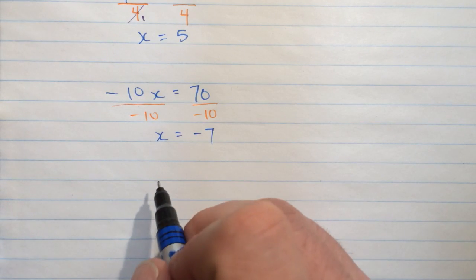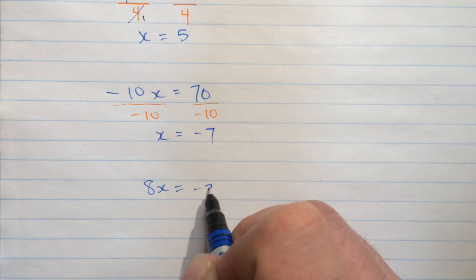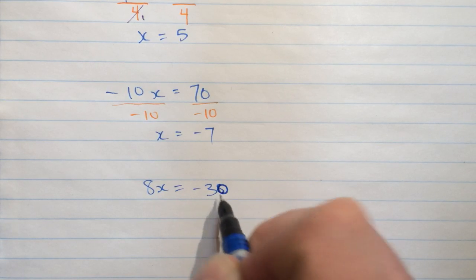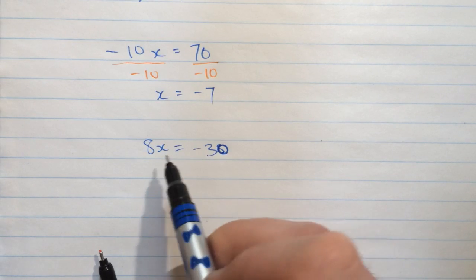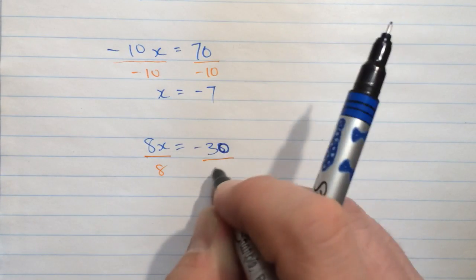They don't always all work out this nicely, though. How about this one? 8 times x equals negative 30. Well, once again, multiplication. Let's do the opposite. We divide both sides by 8.